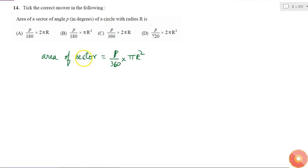So if I look at the options now, here it is P by 180 into 2 pi R. I should get pi R square but here it is 2 pi R, so this cannot be the answer, right?